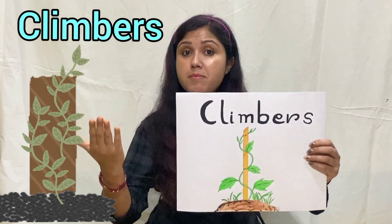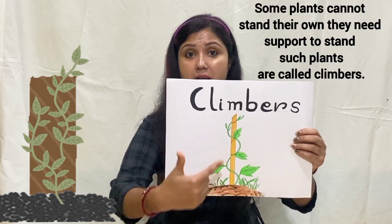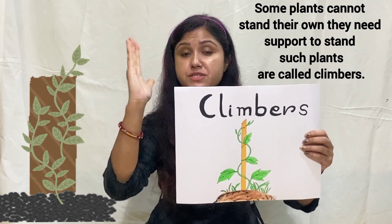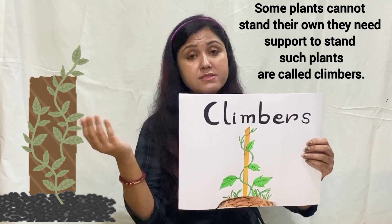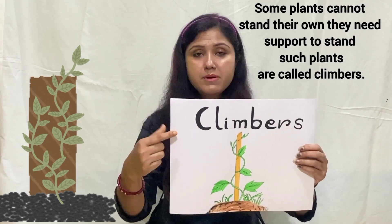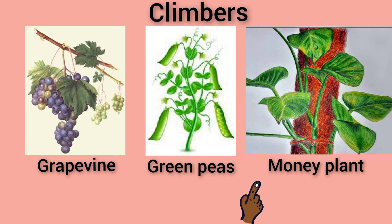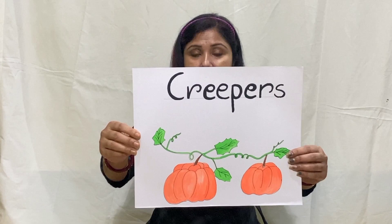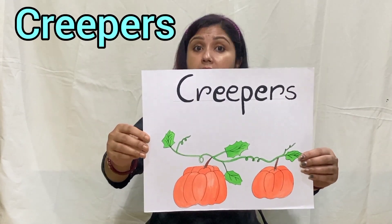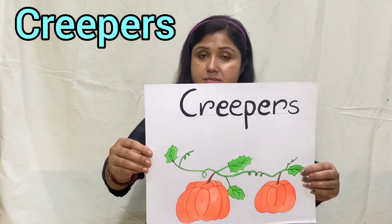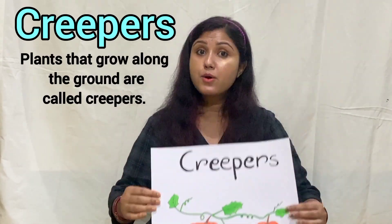The next type is climbers — C-L-I-M-B-E-R-S. Some plants cannot stand on their own; they need support to stand. Such plants are called climbers. Examples include grapevine, green peas, and money plant.